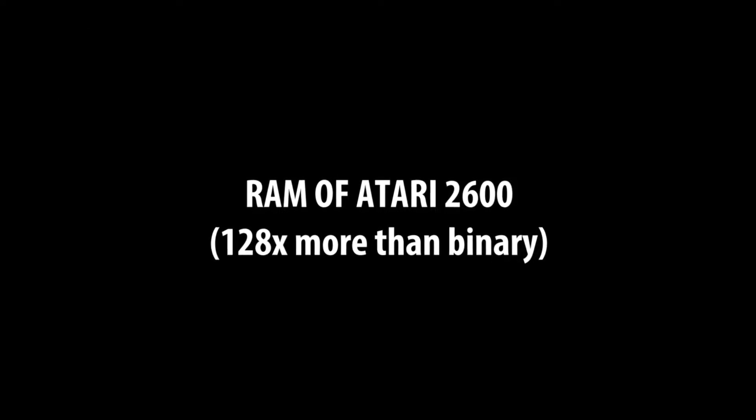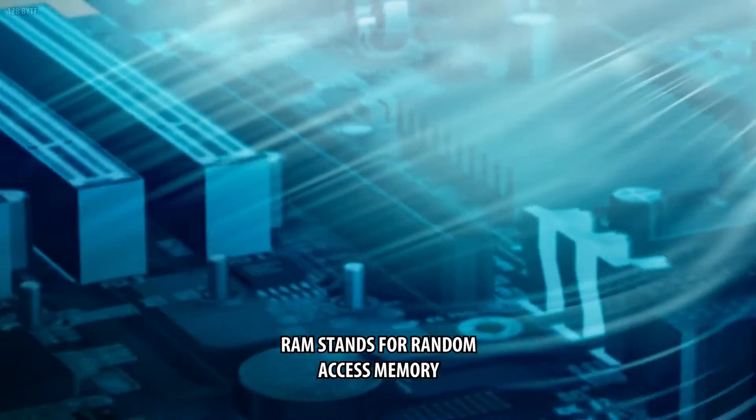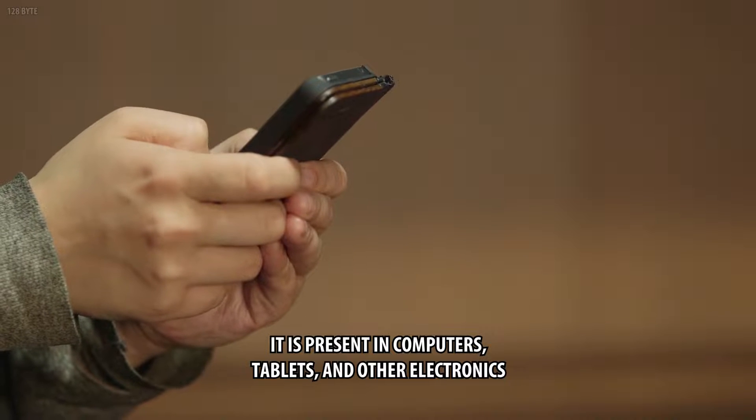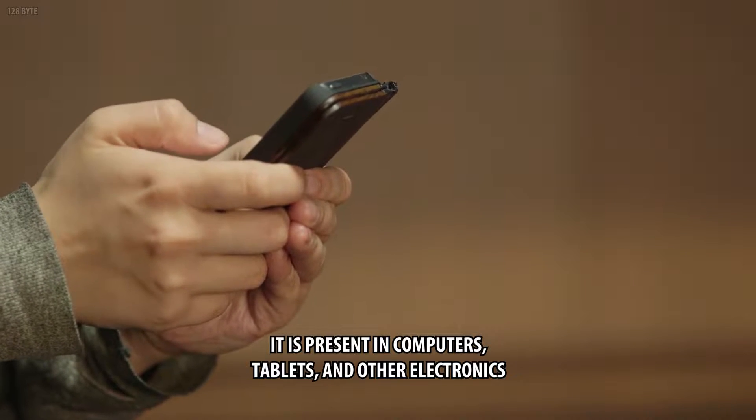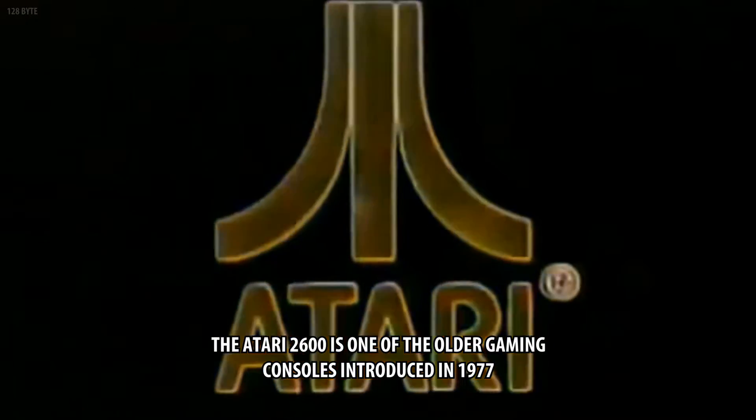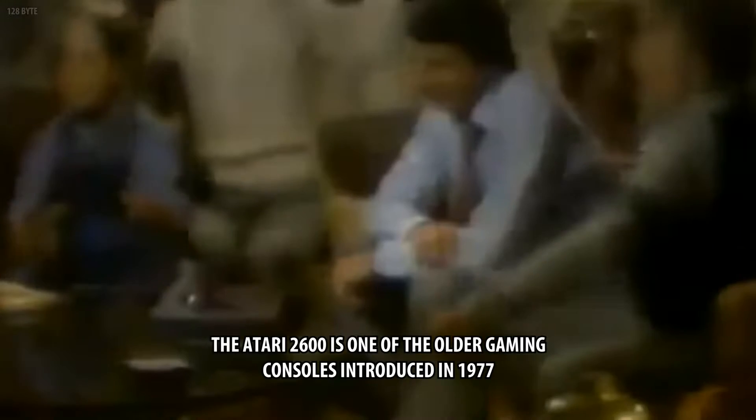RAM of Atari 2600, 128 times more than binary. RAM stands for random access memory. It is present in computers, tablets, and other electronics. It allows the device to randomly access any byte of data. The Atari 2600 is one of the oldest gaming consoles, introduced in 1977. It had 128 bytes of RAM.